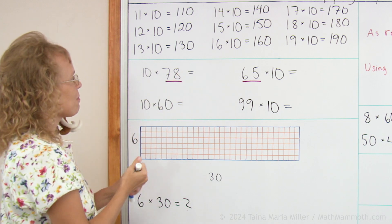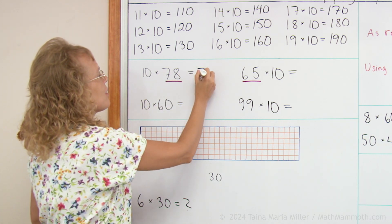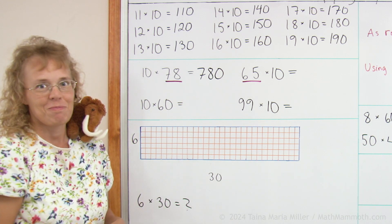10 times 78. Just write 78 and then write a zero after it. That's it.